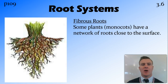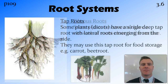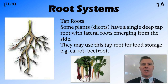There are two types of root systems. Some plants have fibrous root systems, which are a vast network of roots that are close to the surface. Other plants have a single tap root that goes deep into the soil and then has multiple lateral roots coming out of the side of this one tap root.